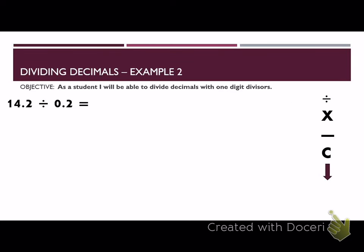Our next example is 14 and 2 tenths divided by 0 and 2 tenths. Please always remember that the first number goes inside the division box. Here is our division box, and we have 14 and 2 tenths. We have 0 and 2 tenths on the outside.